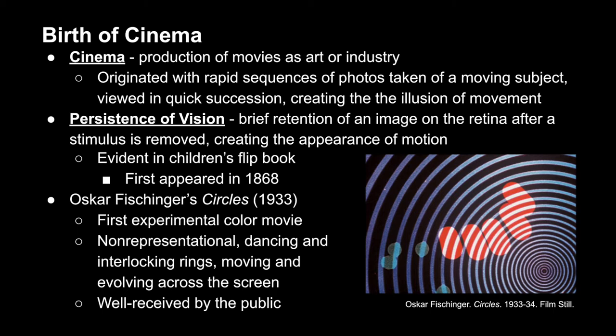This process relies on persistence of vision, which is very similar to an after image. In both of these, the image that you see — or the stimulus that your eye receives — remains on the retina even after the image or stimulus has been removed, and in doing this, when you're seeing multiple images, it creates this appearance of motion.